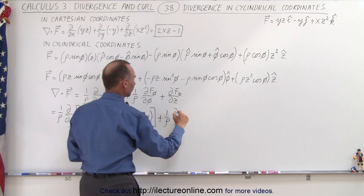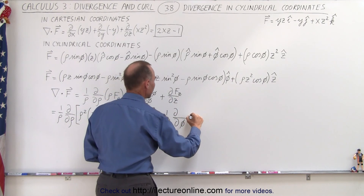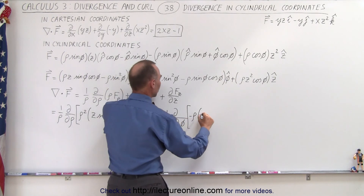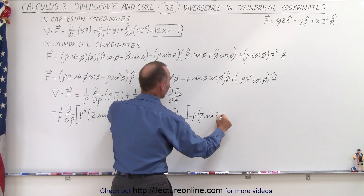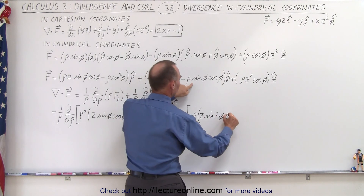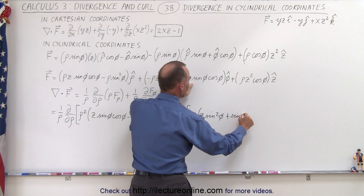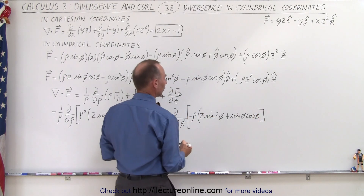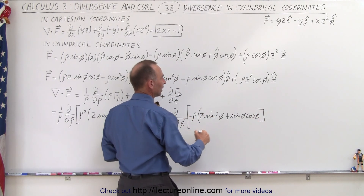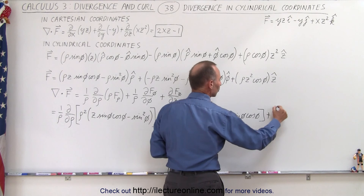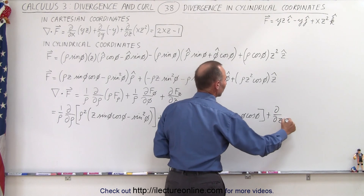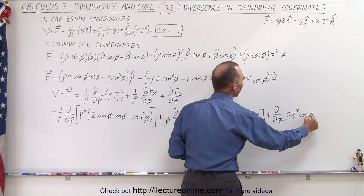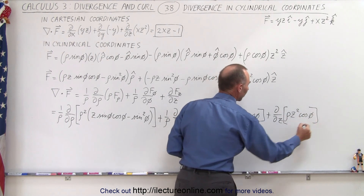We can factor out a negative rho, which leaves us with z times sine squared of phi plus sine of phi times cosine of phi. Then finally we take plus the partial derivative with respect to z of rho times z squared times cosine of phi.